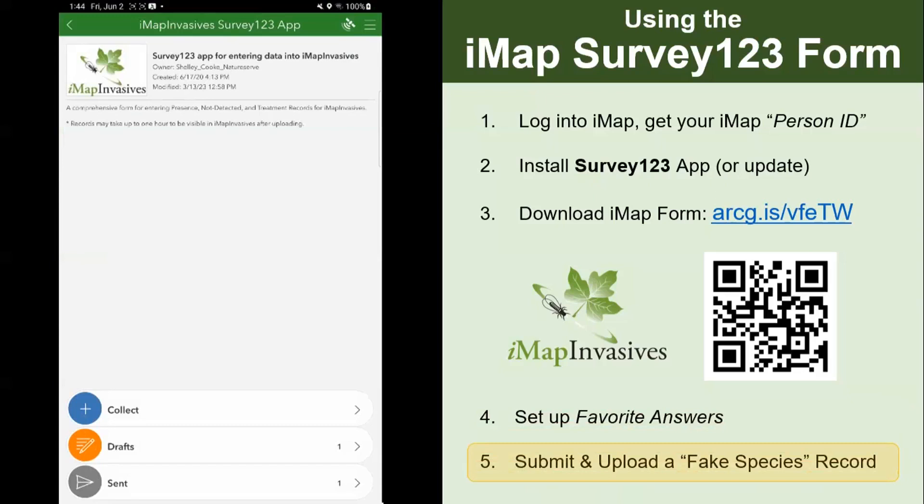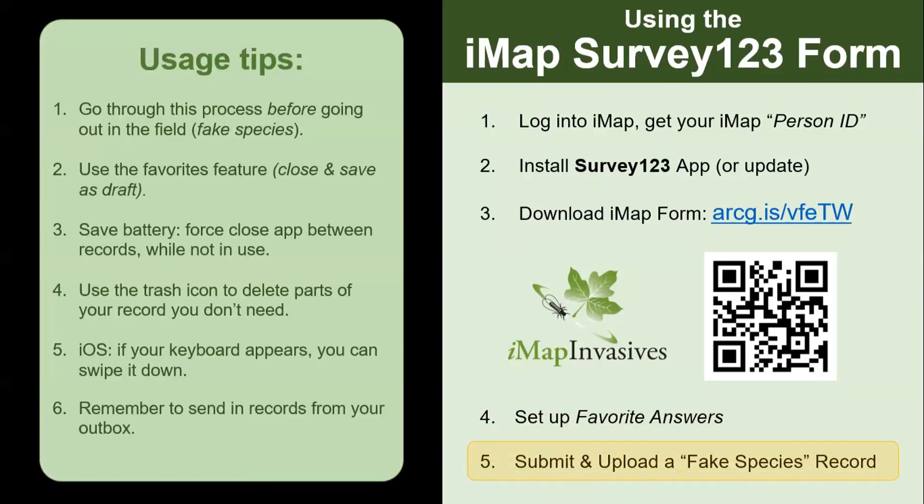If you have any problems with any part of this tutorial, please reach out to your jurisdiction's IMAP Invasives administrator. Before I end the tutorial, I just wanted to share a handful of general tips for using Survey123. My number one tip is to make sure you go through this process before going out in the field and trying to record species. I really encourage you to follow this tutorial and submit a fake species record to make sure it's all working for you.